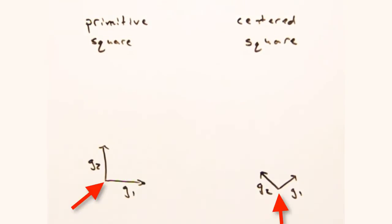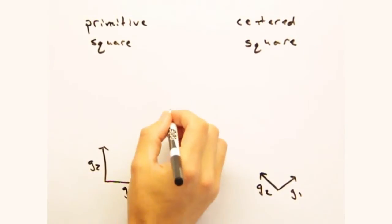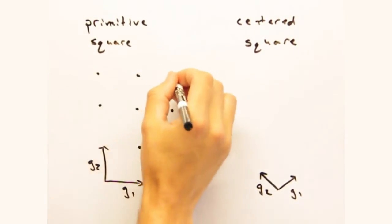Picking our origin here, we can use these g vectors to populate the reciprocal lattice for each cell. But of course we get different reciprocal lattices.